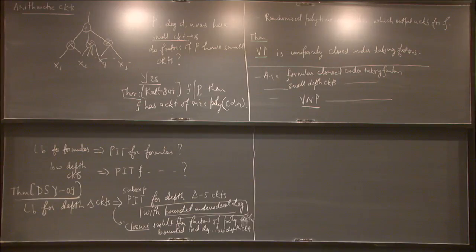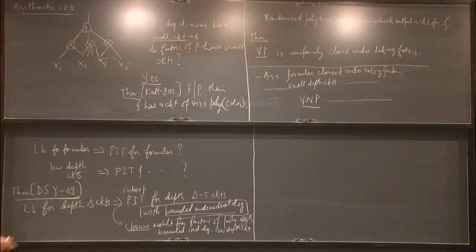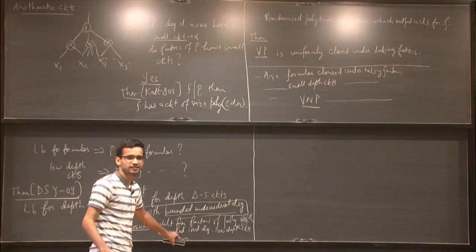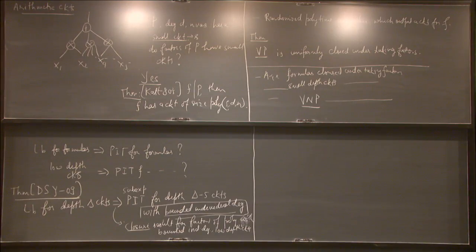Why should one expect PIT from a lower bound? Similar to the Nisan-Wigderson generator — like in Boolean circuits you get a PRG from a hard function, and the PRG can be used to derandomize. That's the idea. And the connection to factoring will come from a hybrid argument when you are plugging in the PRG.